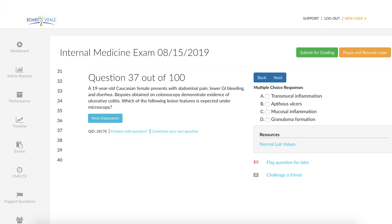A 19-year-old Caucasian female presents with abdominal pain, lower GI bleeding, and diarrhea. Biopsies obtained on colonoscopy demonstrate evidence of ulcerative colitis. Which of the following lesion features is expected under microscopy?